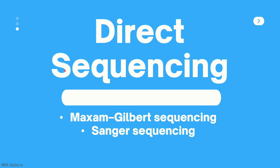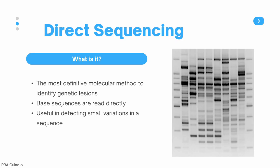Now let's go into the different types of DNA sequencing techniques. The first grouping is called direct sequencing, and here there are two examples: Maxam-Gilbert sequencing and Sanger sequencing. Direct sequencing is the most definitive molecular method to identify genetic lesions and to know the sequence of DNA.